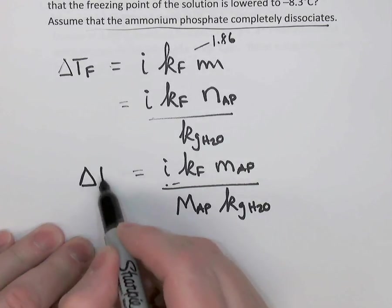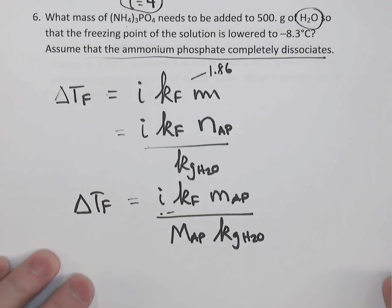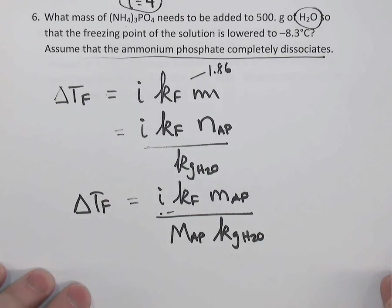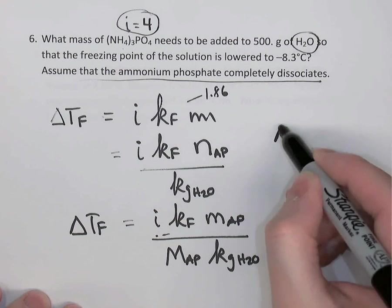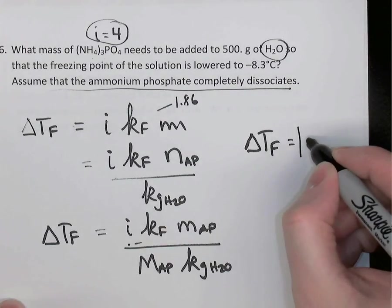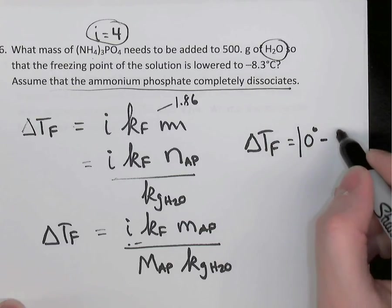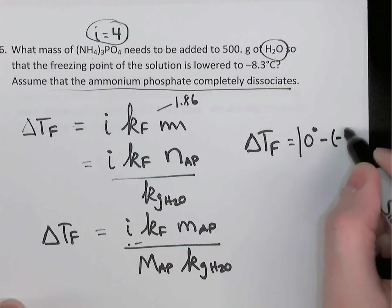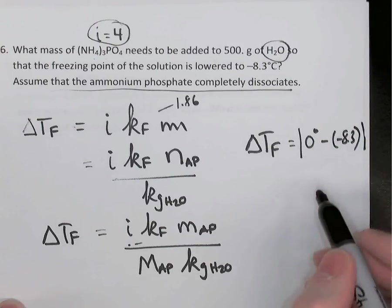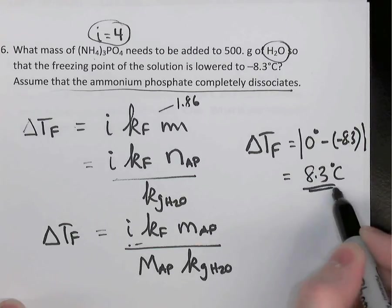Delta Tf equals this. The question is looking for the mass of ammonium phosphate that we would need to get the freezing point of a 500-gram sample of water down from zero to minus 8.3. So we could calculate what delta Tf is equal to. Delta Tf is the absolute value of the normal freezing point of water, so zero degrees Celsius, minus the freezing point that we're trying to achieve, which is negative 8.3 degrees Celsius. And so when you subtract and take an absolute value, you'll get 8.3 as our delta Tf.